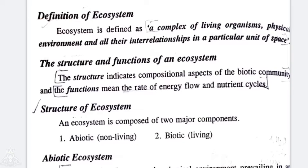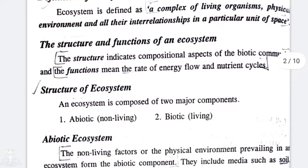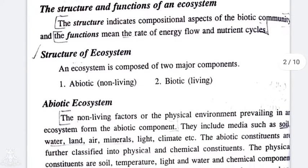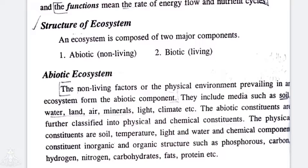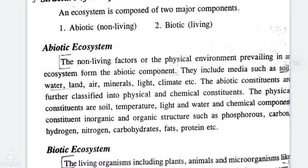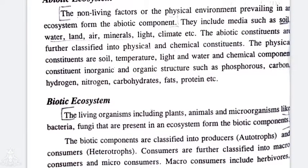The biotic and abiotic elements are interrelated within the ecosystem. Now let's look at the Structure and Functions of an Ecosystem. An ecosystem is composed of two major components: abiotic and biotic. The abiotic component refers to the non-living factors — the physical environment prevailing in an ecosystem, such as air, soil, water, and rock.